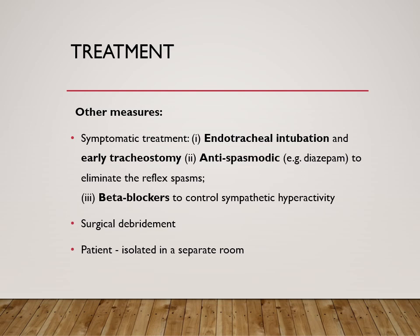Other measures include symptomatic treatment such as endotracheal intubation — if there is respiratory distress, early tracheostomy may be needed. Antispasmodic treatment must be given due to the severe spasms. The autonomic nervous system disturbances also need management. Surgical debridement of the wound is needed to clean it properly and remove the environment that helps the bacteria grow. It is also very important to keep the patient in isolation — not because the disease is transmitted person to person, but because even the slightest noise can aggravate the spasms. There should be proper silence in the room.